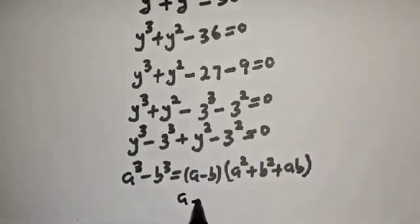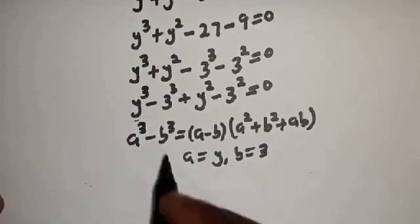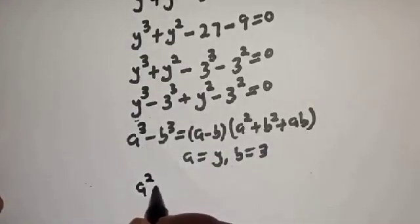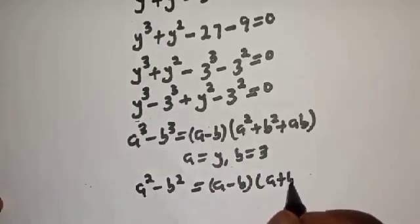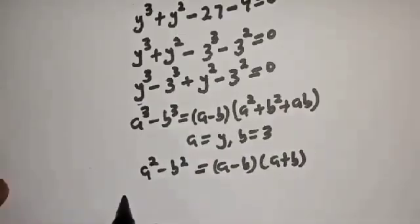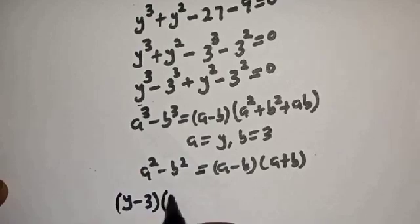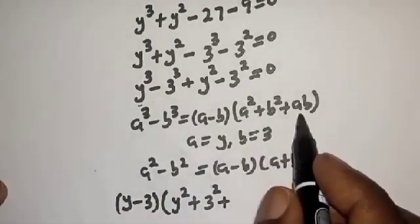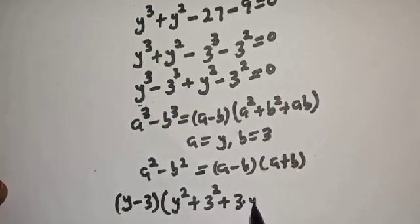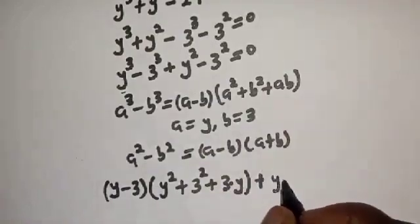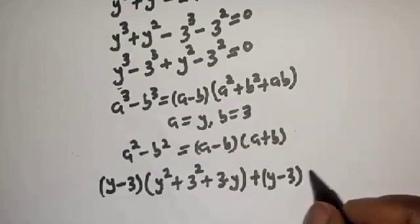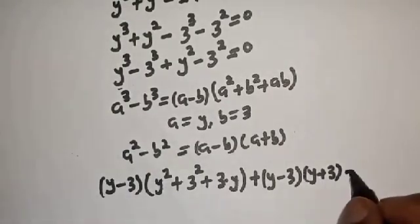Here a equals y and b equals 3. We also apply the difference of squares rule: a² − b² = (a − b)(a + b). Substituting, we get (y − 3)(y² + 9 + 3y) plus (y − 3)(y + 3) equals zero.